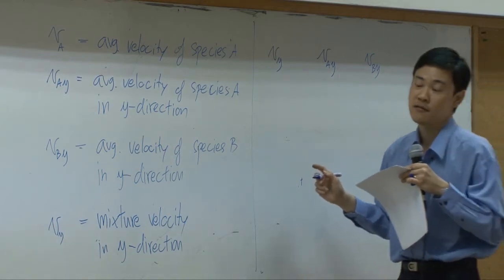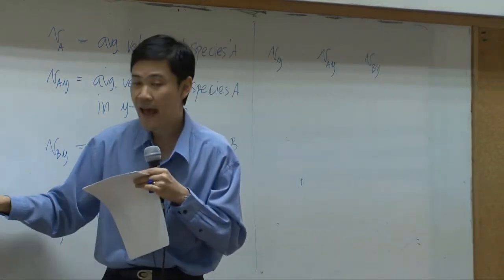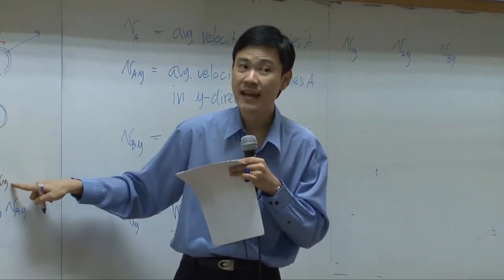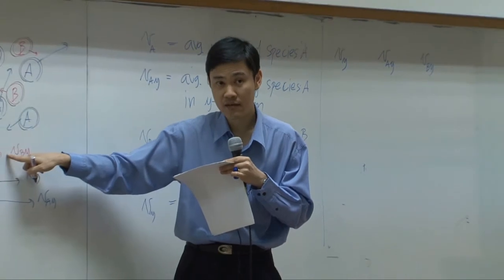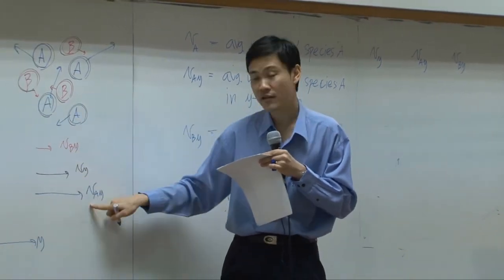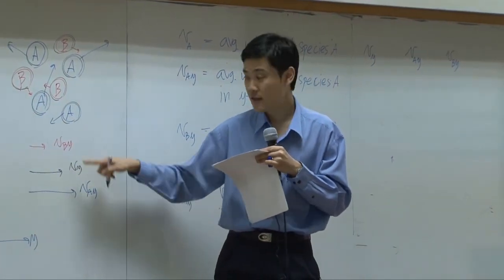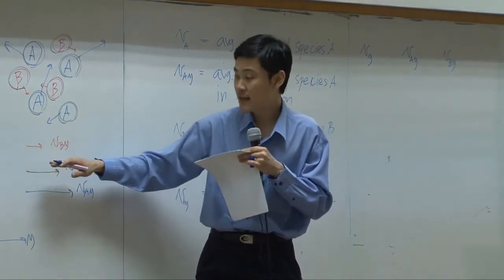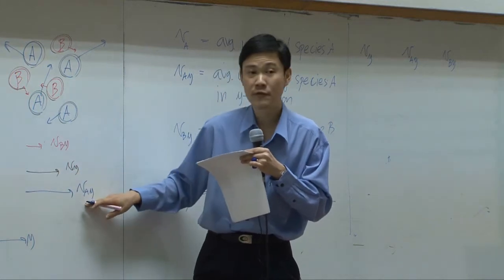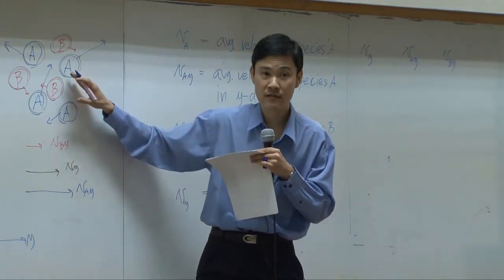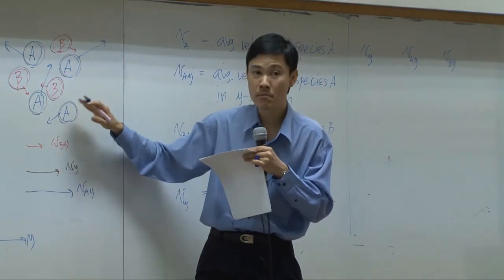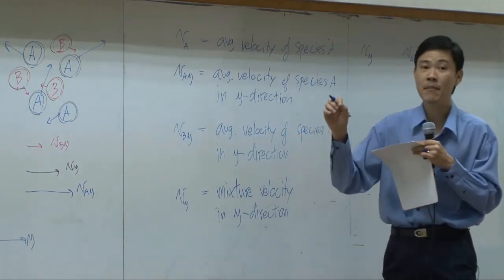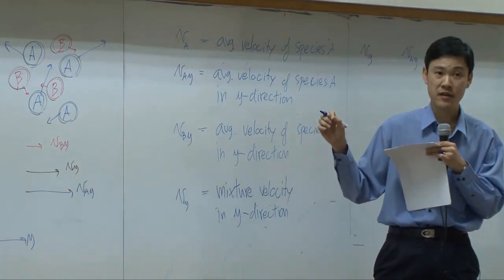However, we know that this is an average between A and B. The average here can never be slower than B and can never be faster than A — it must be somewhere in between. It will become closer to VAY if you have more A. If you have more B, it becomes closer to VB. So it depends on the amount of molecules in your system.